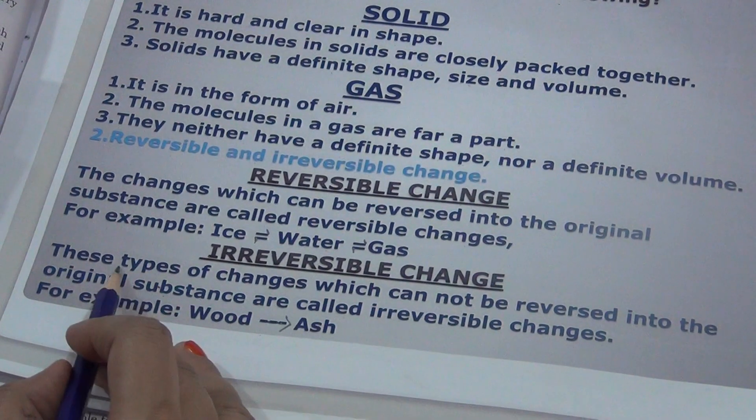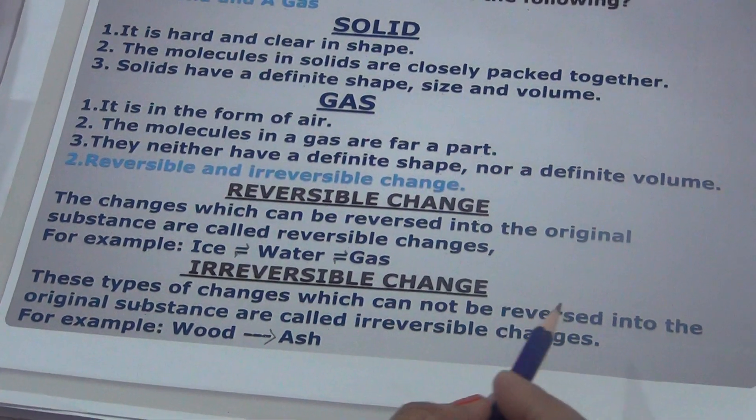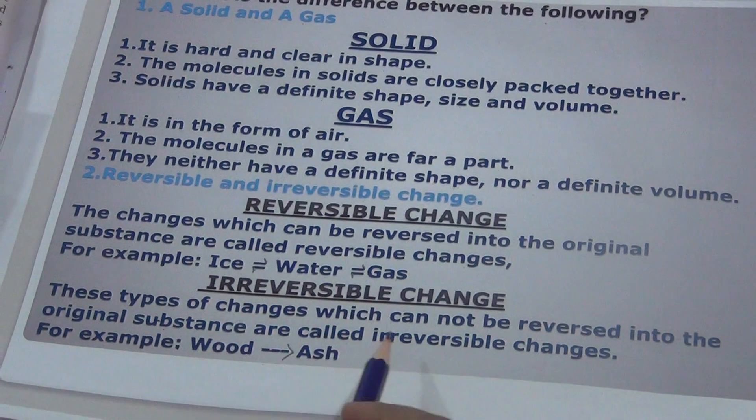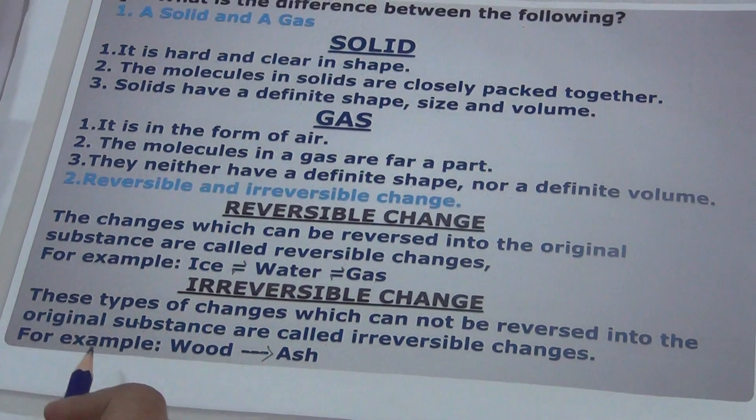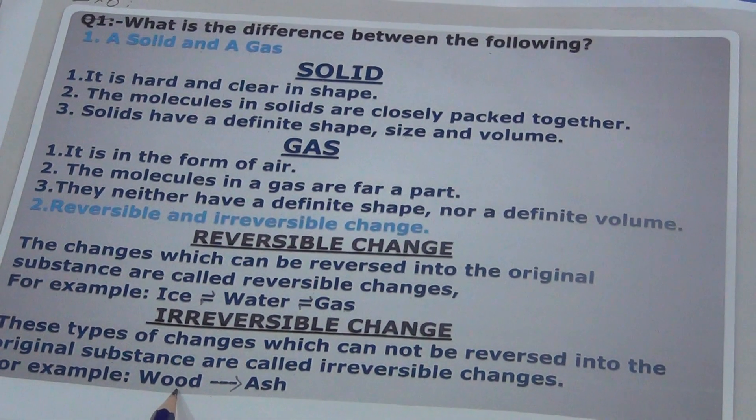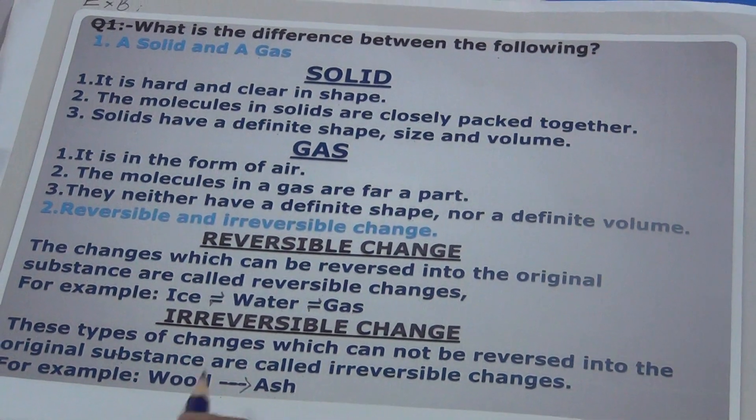Irreversible change. These types of changes which cannot be reversed into the original substance are called irreversible changes. For example, wood changes into ash. When wood is burned, it turns into ash. But from ash we cannot get wood back again.